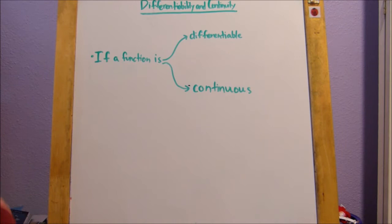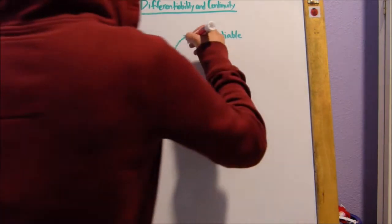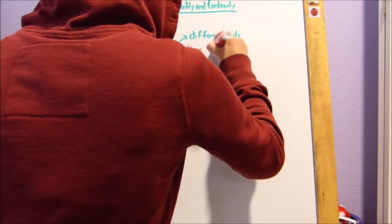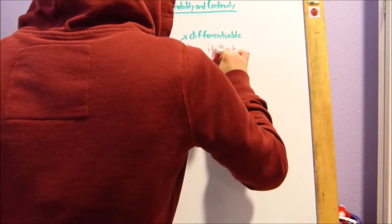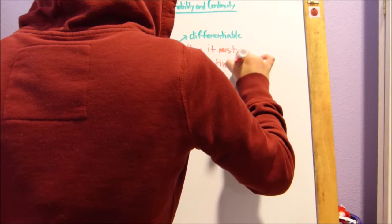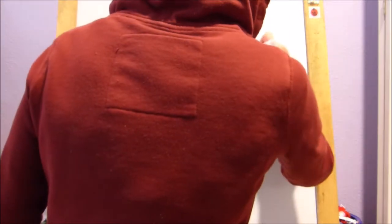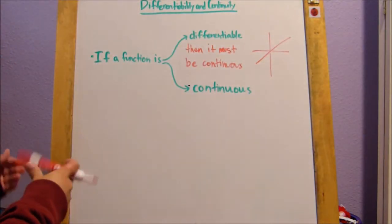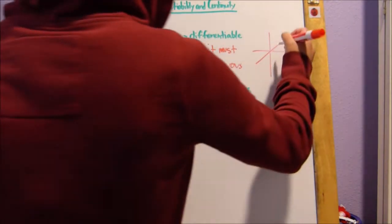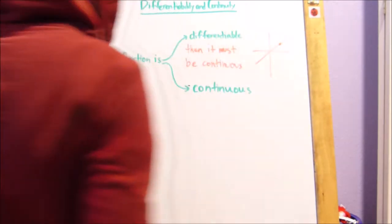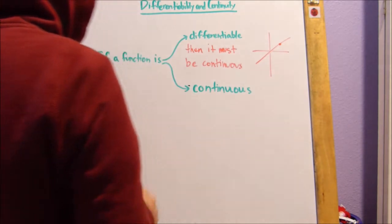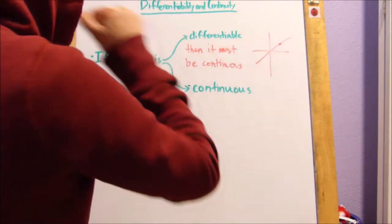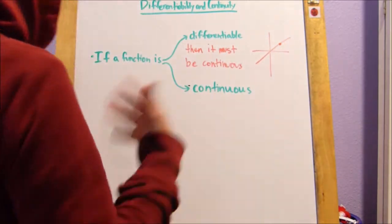If a function is differentiable, then it must be continuous, right? So let's assume we have just this regular linear function, and we're trying to find, or we know the derivative of this point. If we know that this point is differentiable, then this point must also be continuous, right?